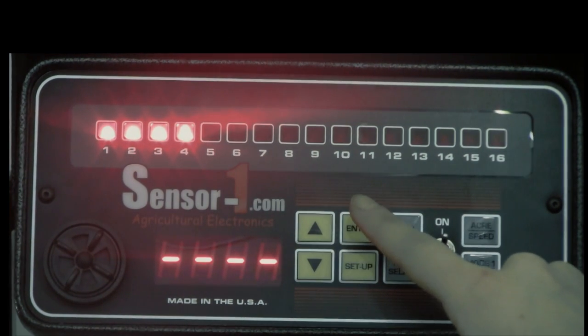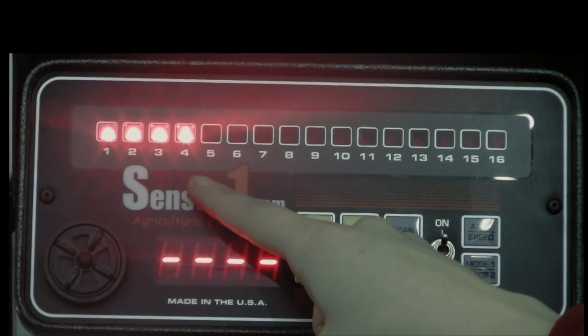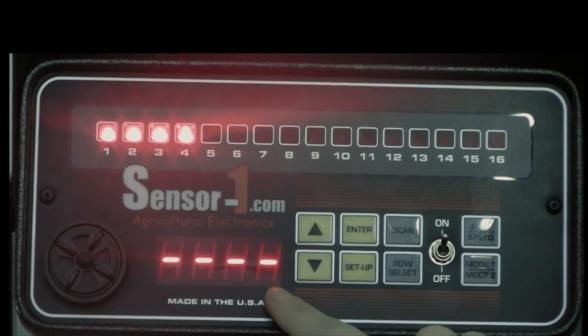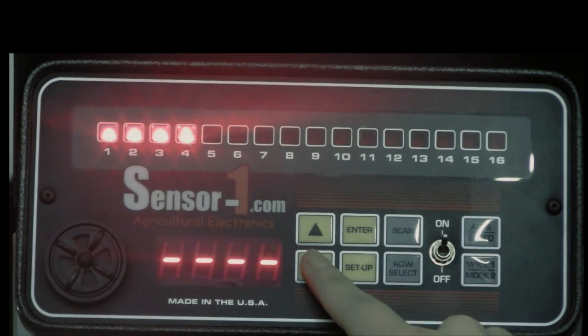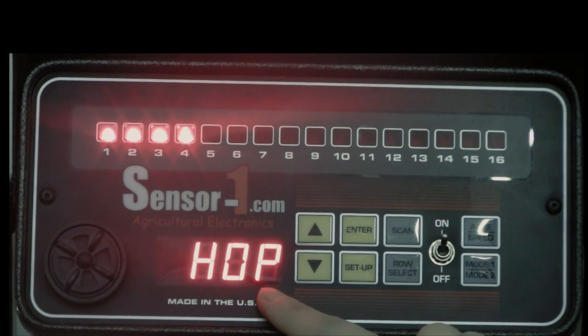The last and final step, lights 1, 2, 3 and 4 should all be on. This setting is for those who use a hopper sensor. If you do not use a hopper sensor, you should have 4 dash marks. If you do use a hopper sensor, you will need to use the arrow keys to change it to the word hop. Press enter once more to end the setup process.